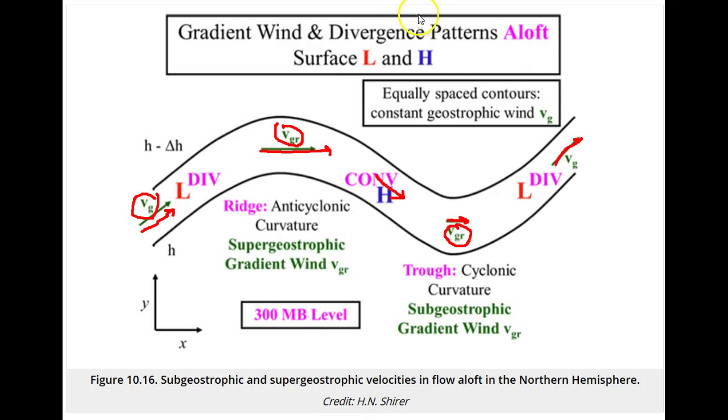The speeding up causes divergence aloft, and the slowing down causes convergence aloft, just as you learned in Lesson 9.